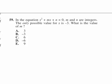In the equation x squared plus mx plus n equals 0, m and n are integers. I'm underlining that because that's important. The only possible value for x is minus 3. What is the value of m?